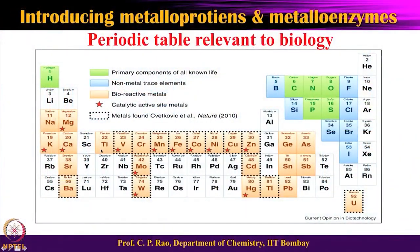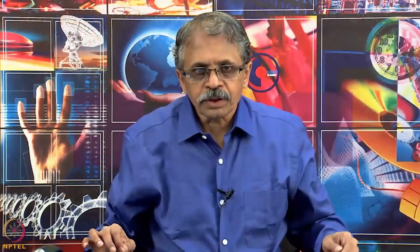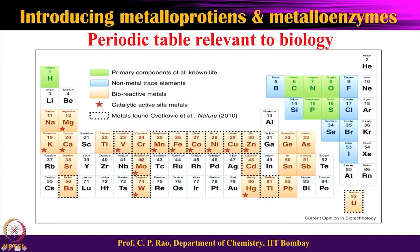Looking at the periodic table relevant to biological systems, we have already covered sodium, potassium, magnesium, and calcium. The next is the transition metal series from titanium to zinc. Titanium is understood as a micronutrient element, but no enzyme has yet been identified. We will skip titanium, look at vanadium, and also skip chromium since it is not involved in enzymes. We will cover manganese, iron, cobalt, nickel, copper, and zinc in this order.